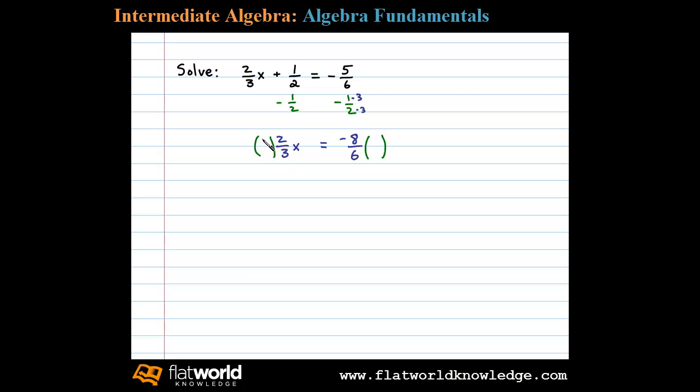So we choose to multiply both sides by 3/2, its reciprocal. That'll leave us with 1x equals in this case negative 24 over 12. Reducing, we have our solution: x equals negative 2.